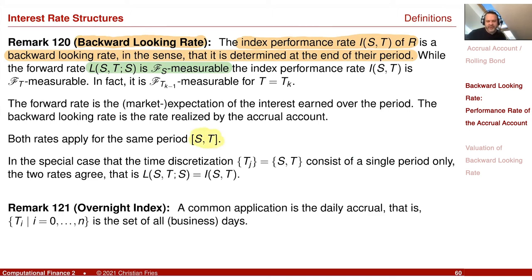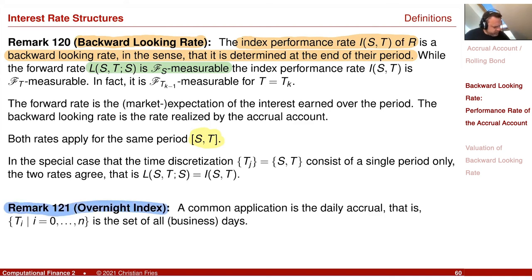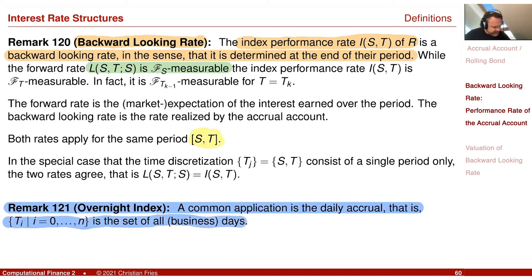A special example of such backward-looking rates are overnight index indices. When your time discretization is so fine that it is just one day, you accrue an amount every day. After three months you ask how much money you have accrued. This is a definition — a financial product — that is actually traded on the market. An overnight swap exchanges every three months the interest accrued in the past when you accrued every day.